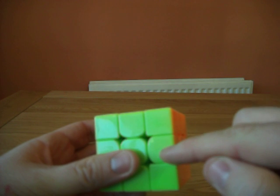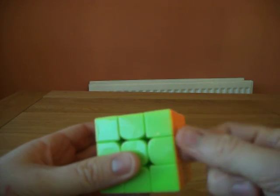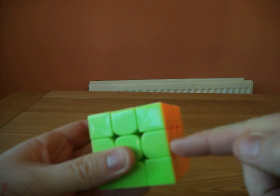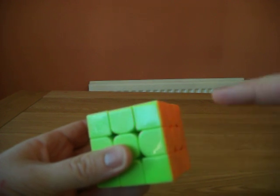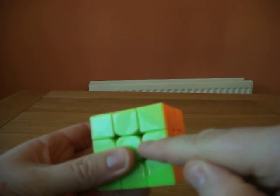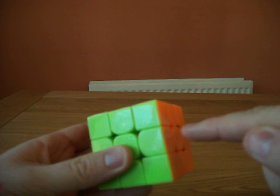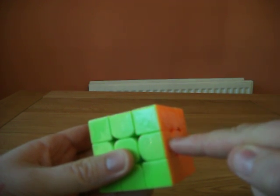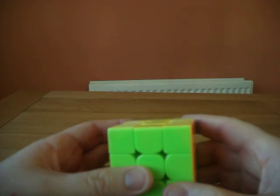Note that the edge itself doesn't twist at all. So there's no way of getting this edge into this position with the orange on the front face and the green on the right face.